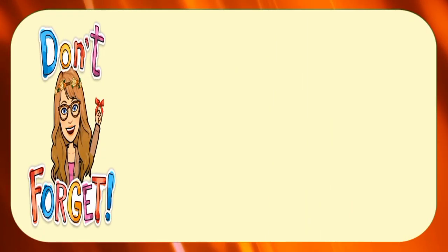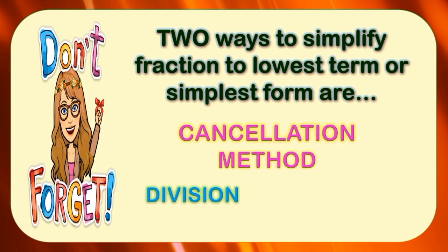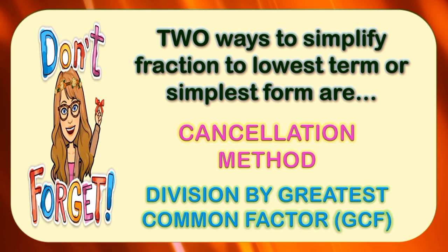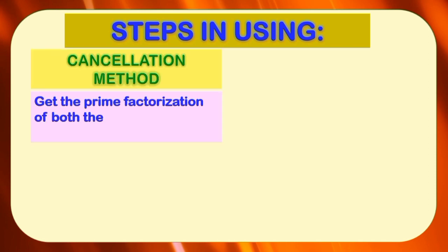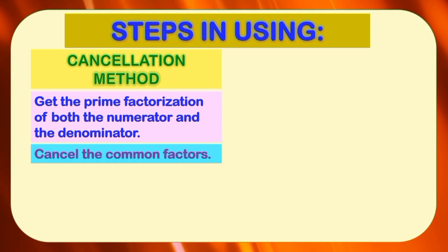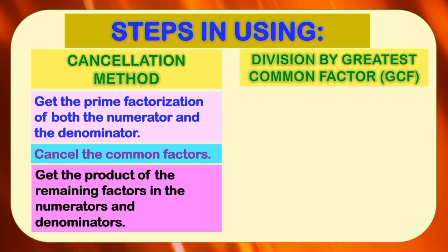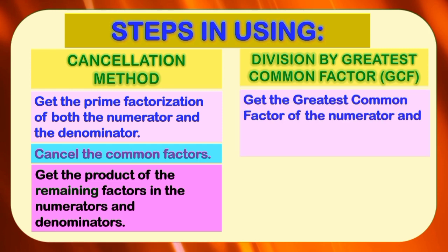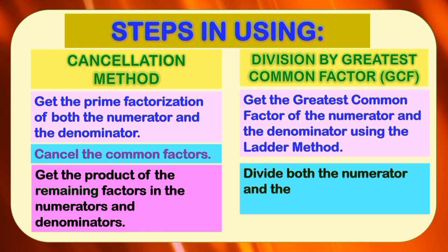Don't forget, children: the two ways to simplify a fraction to lowest term or simplest form are the cancellation method and division by greatest common factor, or GCF. Steps for the cancellation method: first, get the prime factorization of both the numerator and denominator; second, cancel the common factors; and lastly, get the product of the remaining factors. For division by GCF: first, get the GCF of the numerator and denominator using the ladder method; and lastly, divide both the numerator and denominator by the GCF.